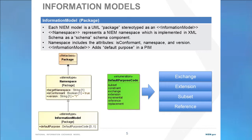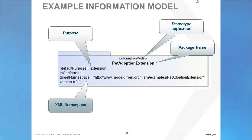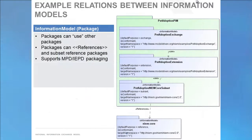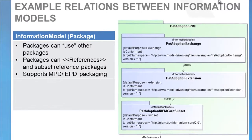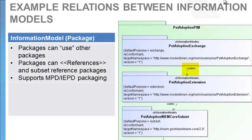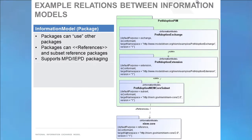These stereotypes and tag values should be used for any package intended for use with NIEM. For example, if we looked at the pet adoption extension package in UML, we see it's marked as an information model, that its purpose is set to extension, it is defined as being NIEM conformant, it has an XML namespace, and a version. There are also relationships between information models. One information model may use another, so it is common for an exchange to use an extension, and for an extension to use one or more subsets.